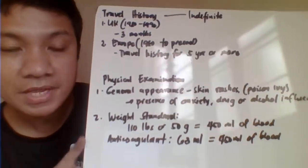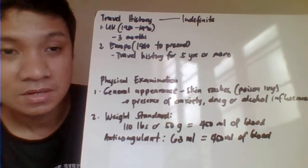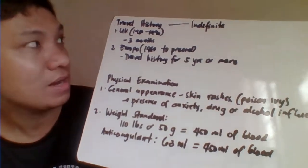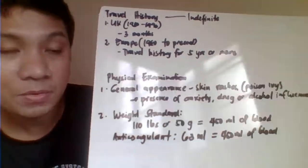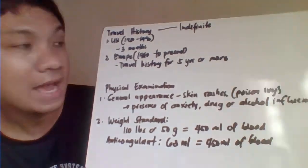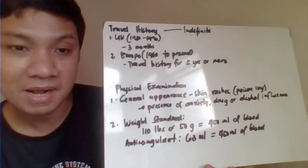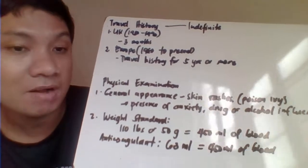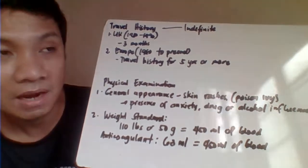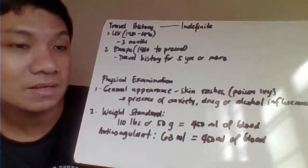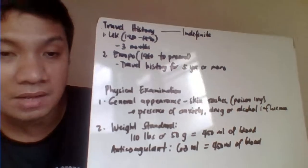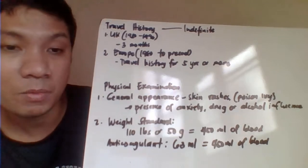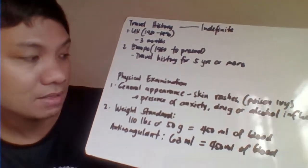For travel history: travel to the UK from 1980 to 1996 for three months results in an indefinite deferment. Travel to European countries starting from 1980 to the present, having traveled for five years or more, also results in an indefinite deferment.